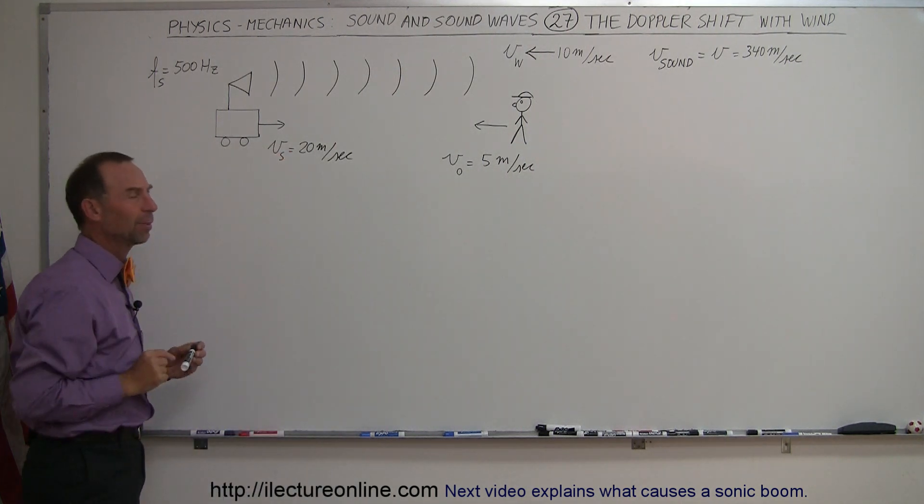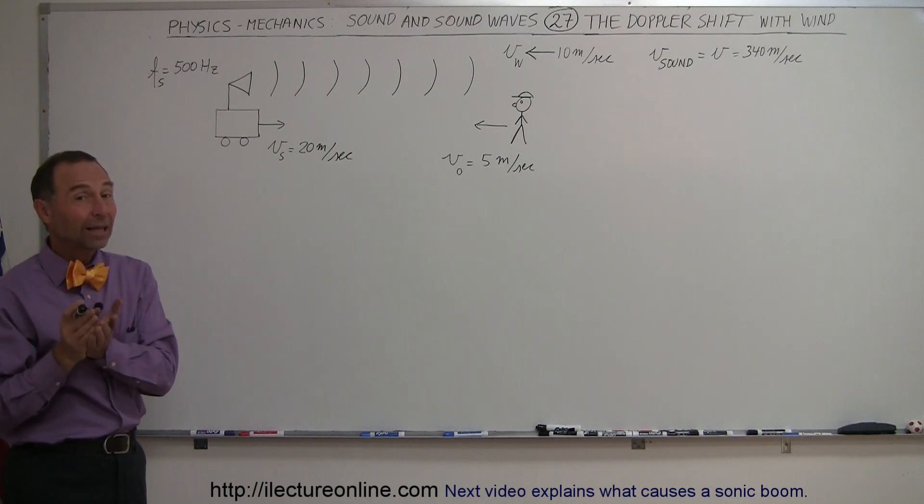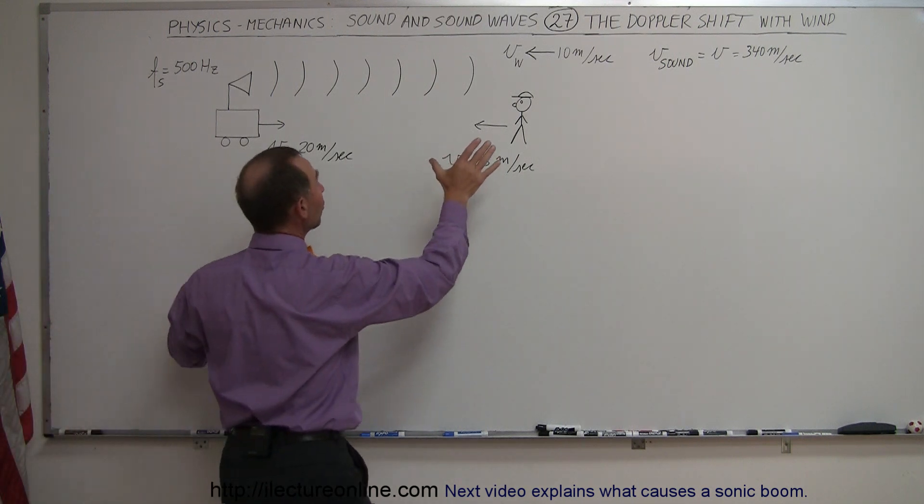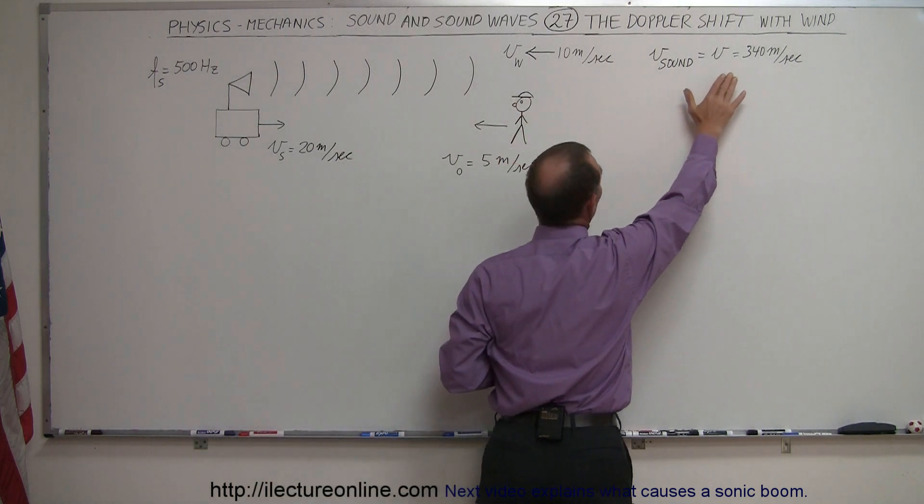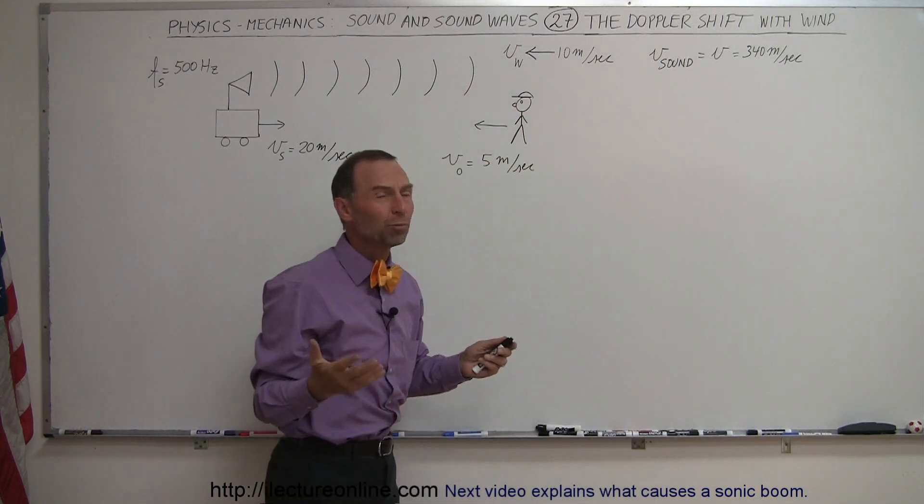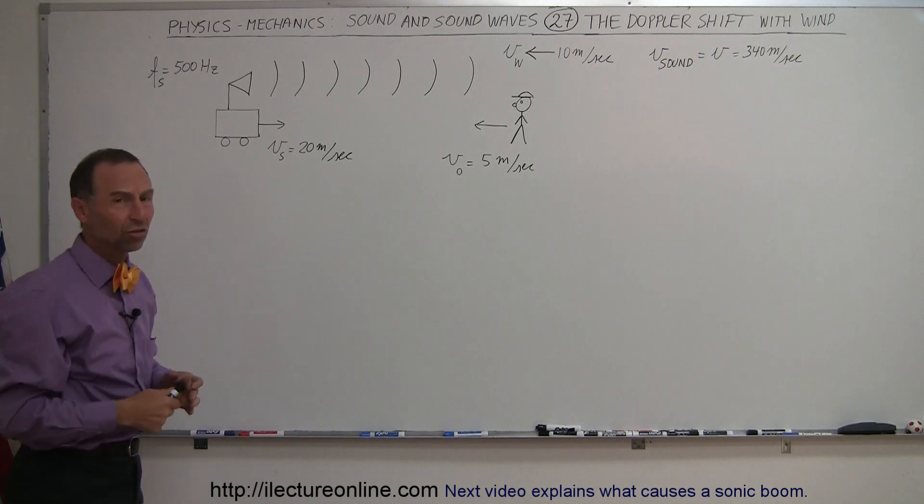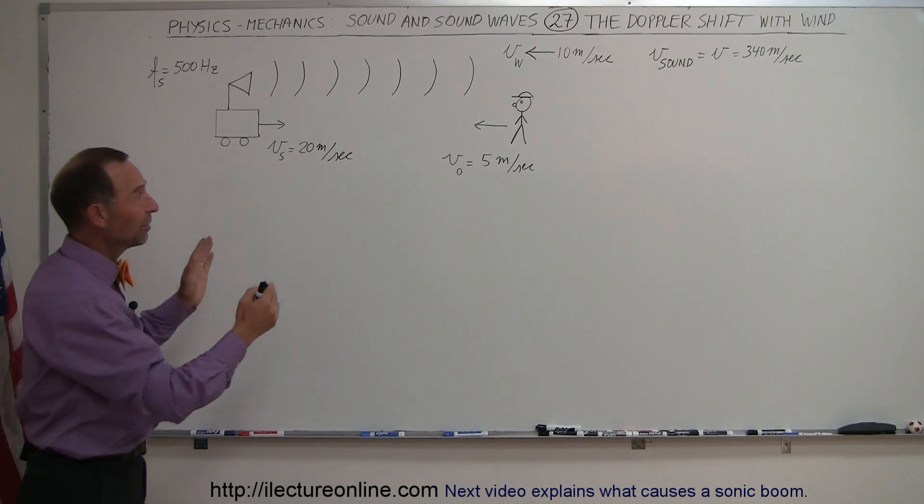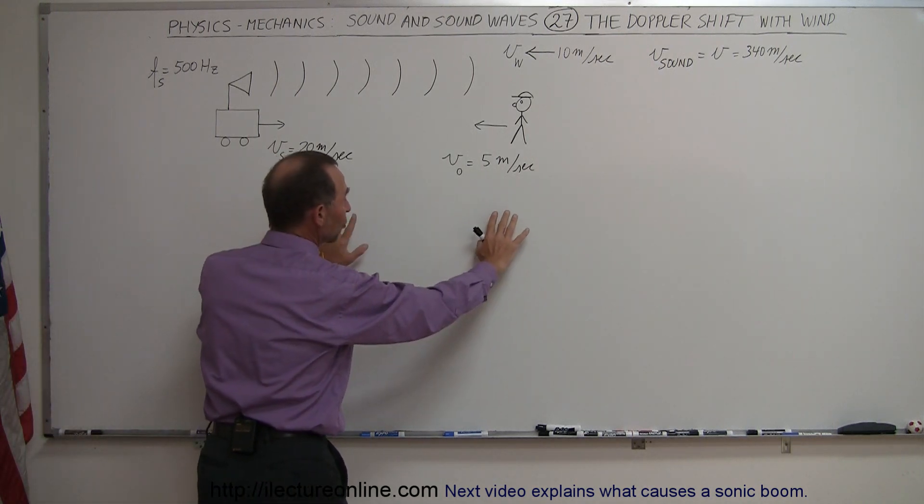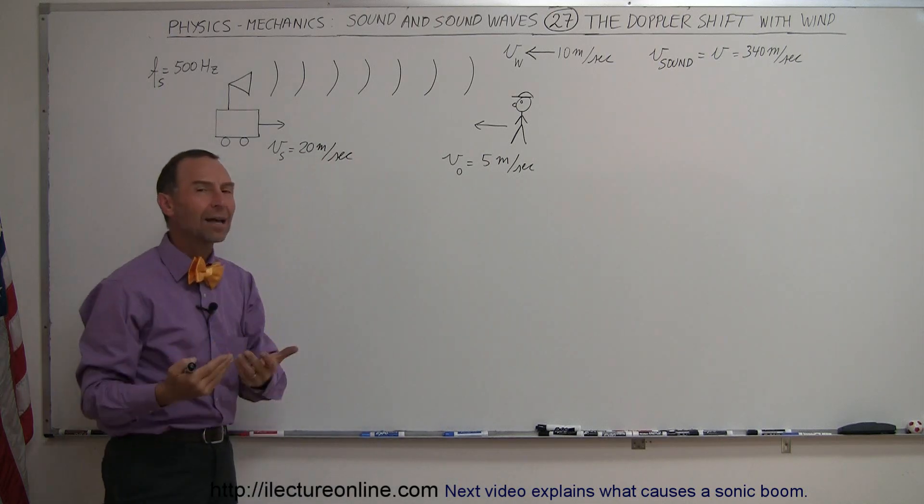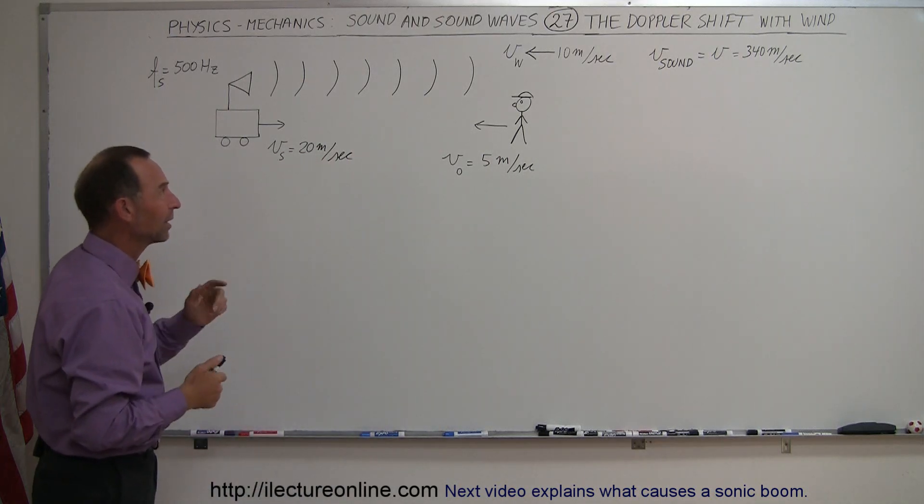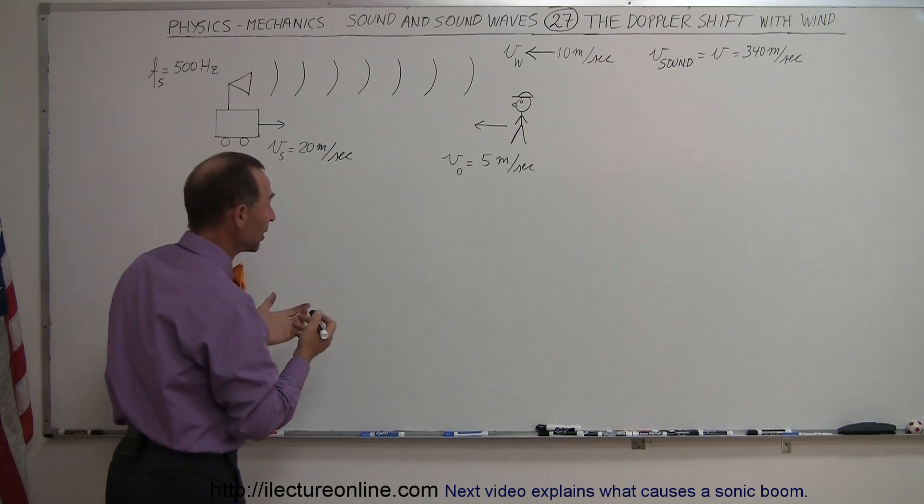In essence, what that does is it actually causes the velocity of the sound to slow down by this amount. Normally the speed of sound at room temperature in windstill condition is 340 meters per second, but if the whole medium through which the sound travels is moving to the left, it has the effect of slowing down the velocity of sound. So you'll hear a different frequency.